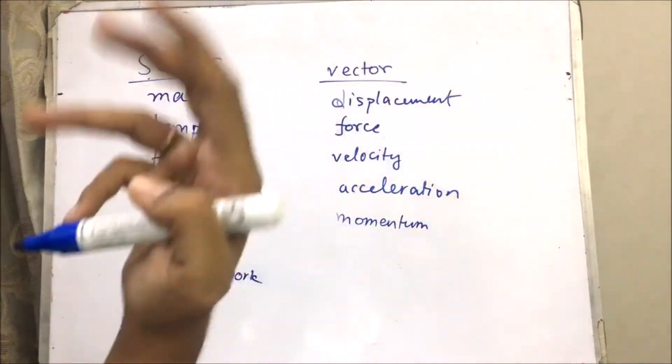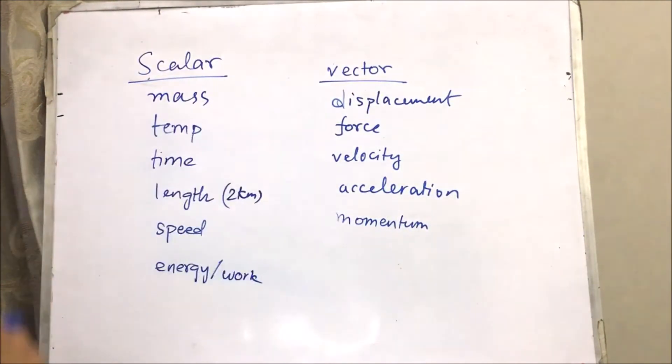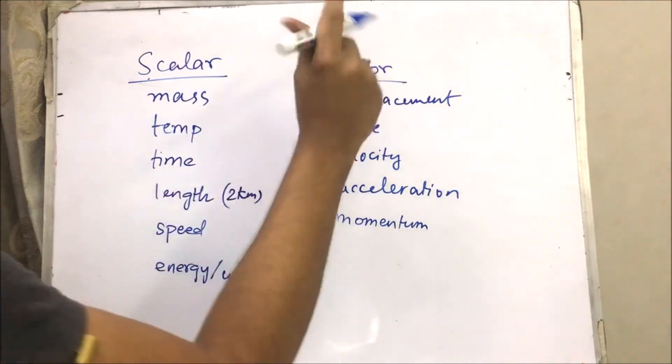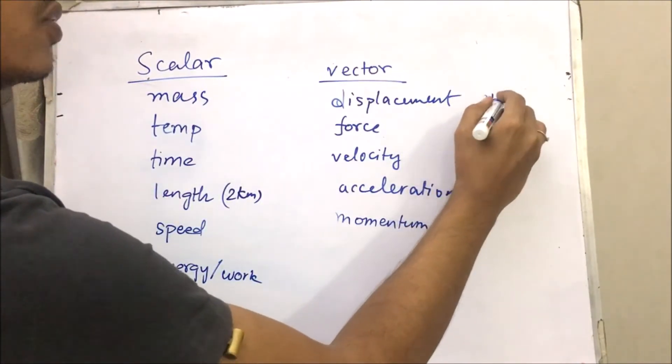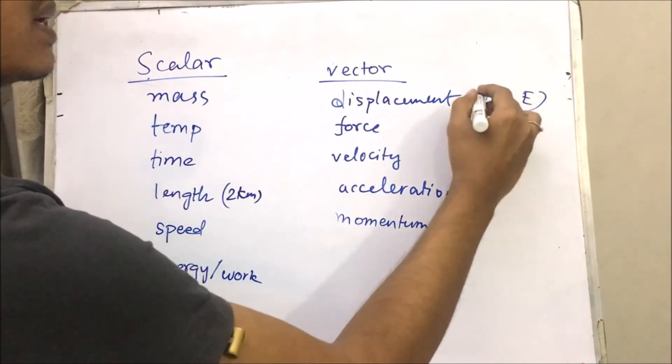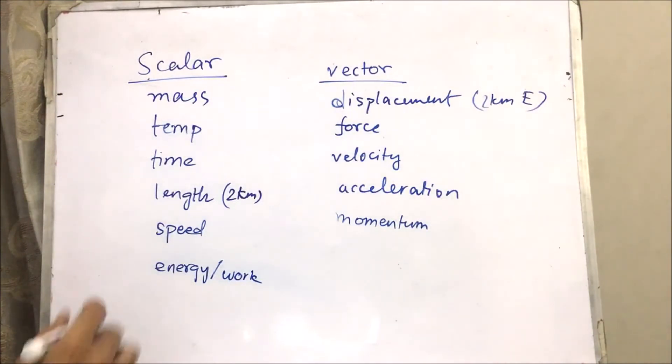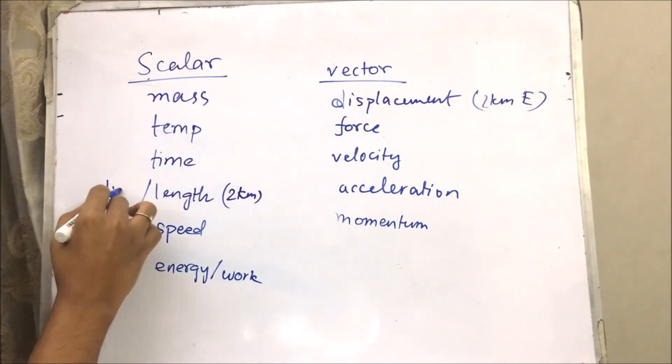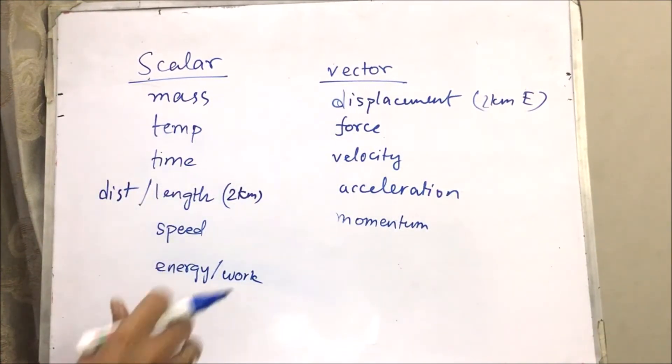In which direction did you travel? I traveled 2 kilometers in the east direction. Then, this length becomes a displacement. 2 kilometers to the east becomes a displacement. This length can also be called a distance. And when you add a direction, it becomes a vector quantity.